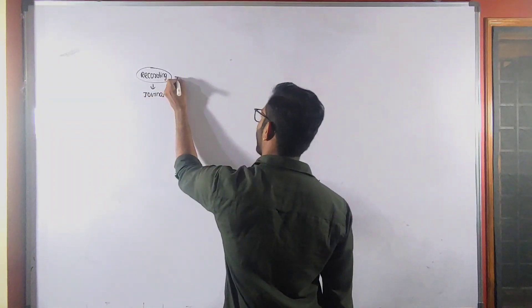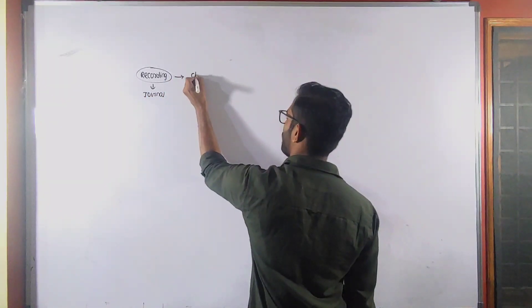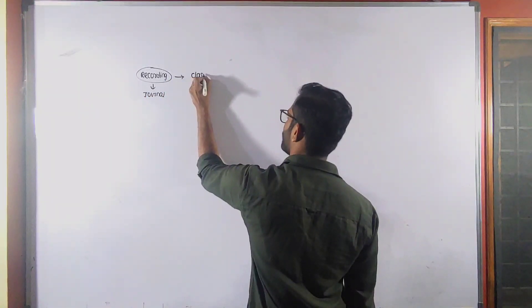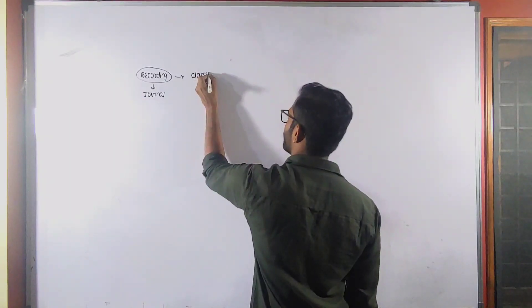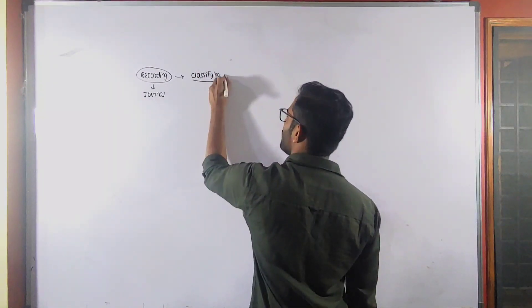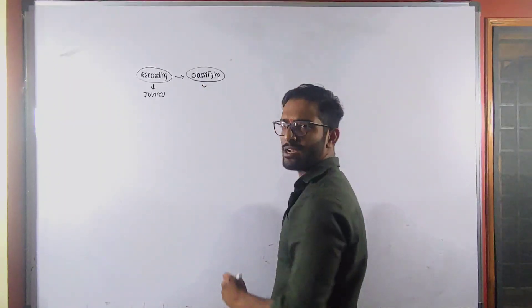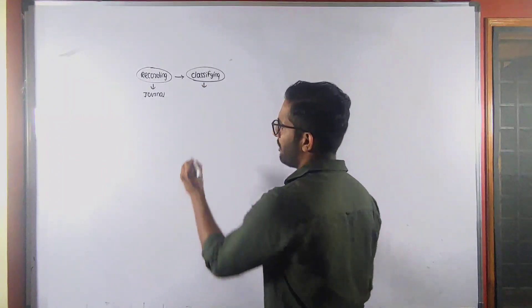The second stage of accounting is classifying. It is the stage where the ledger accounts are prepared.